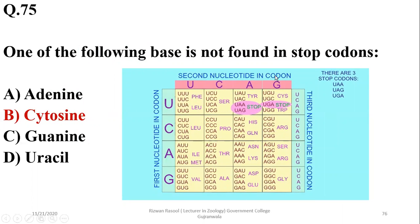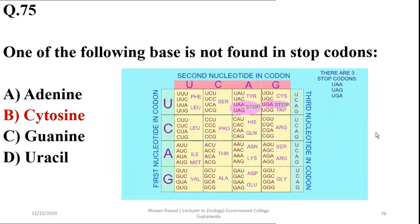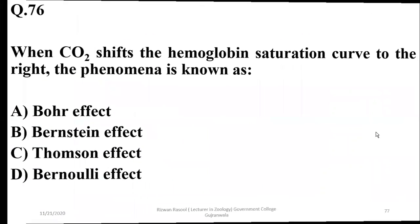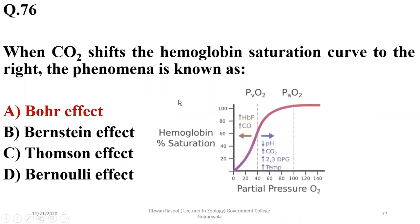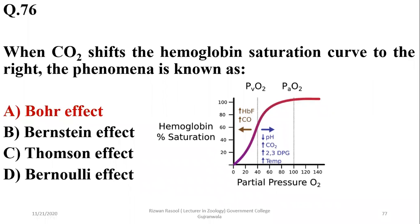The three stop codons are UAA, UAG, and UGA. When CO2 shifts the hemoglobin saturation curve to the right, the phenomenon is referred to as the Bohr effect. The right option is A.